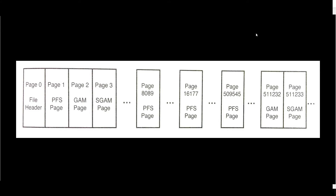The GAM, SGAM, and PFS pages are not per object but per whole database file. Page 0 is always the file header. Page 1 of each database file is always the first PFS page. Page 2 is the GAM page and page 3 is the SGAM page. If the full 4-gigabyte coverage of a GAM page is used, you follow the next pointer — same for the SGAM and PFS pages.